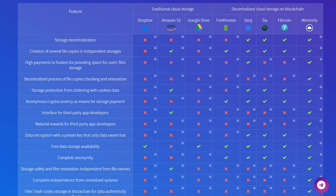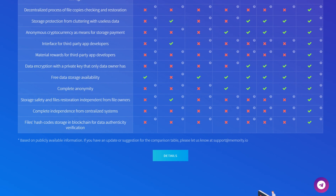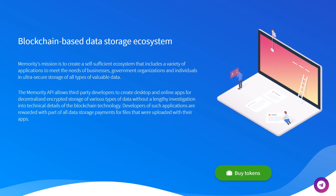Everything above allows for unprecedented protection of files from deletion and forgery. The motivation mechanism for hosters — people who provide physical memory and electronic data storage devices — aims to include as many ordinary computer users as possible in order to maximize the number of independent repositories. Such a system will protect user data even if developers, the platform itself, or up to 19% of hosters are lost at the same time. Complete self-sufficiency and decentralization allow the system to continue working for many years without external management.